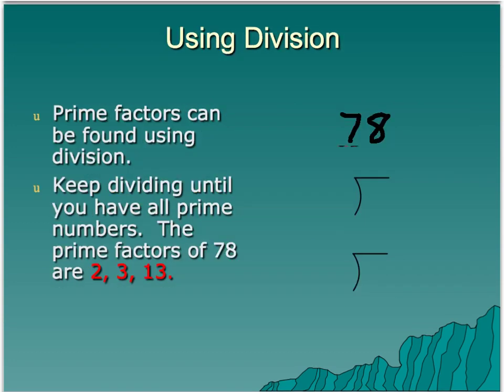So if we wanted to find the prime factorization of 78, we could use division. This is a little different approach than we did last time. If we have 78, we think about what 78 is divisible by. 78 is divisible by 2, and 78 divided by 2 is 39.